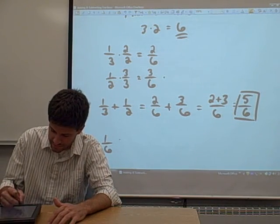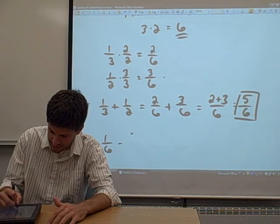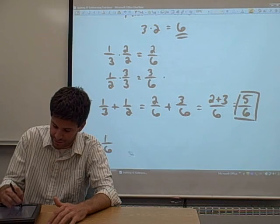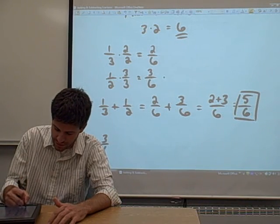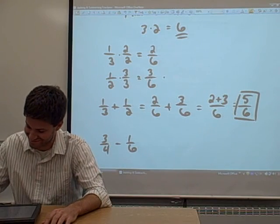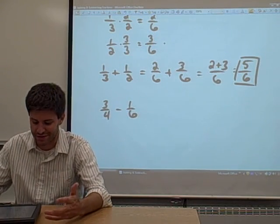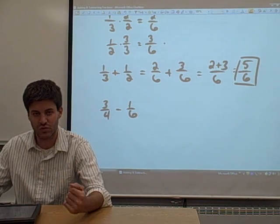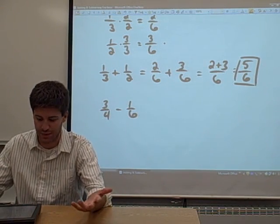1 sixth minus 3 fourths. Let's turn that around. Let's actually do 3 fourths minus 1 sixth. So we need to find a common denominator to subtract these two fractions. And there's more than one way to do it. There's more than one common denominator.